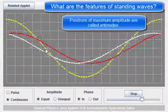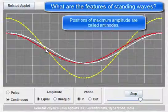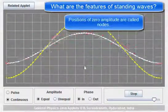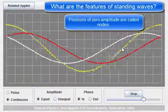The positions along the standing wave where there is no amplitude, so where the particles don't vibrate at all, those positions are called nodes. Here we have a node, and there we have another node.